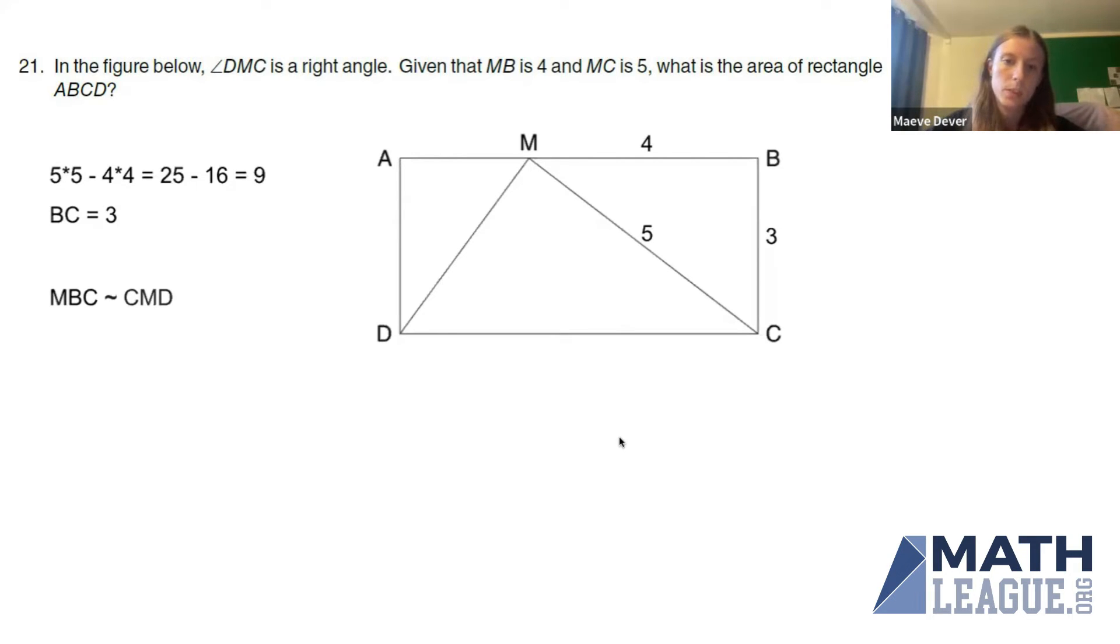Similar triangles means we have ratios. In particular, DC is a side of one of these similar triangles and we know all about triangle MBC. This is looking really good. Let's do some ratios: the ratio of the hypotenuse to the longer leg of the triangle. So DC is the hypotenuse of DMC and MC is the longer leg, and then MC is the hypotenuse of MBC and MB is the longer leg. So the ratio of DC to MC is the same as the ratio of MC to MB.